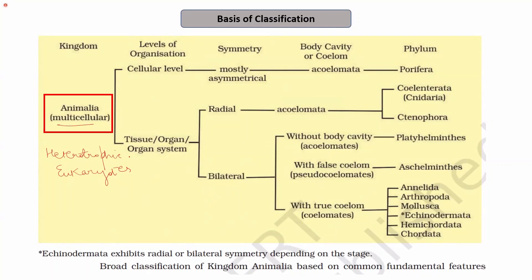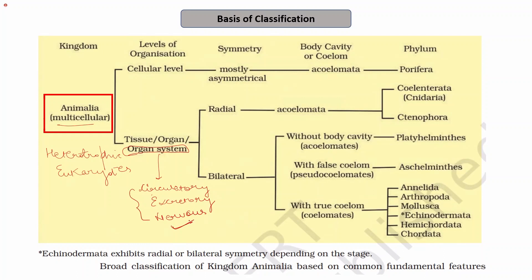The animals that belong to phylum Annelida have organ system level of organization. That is, they have a circulatory system, an excretory system, and a nervous system. All these systems are developed in the organisms that belong to phylum Annelida.